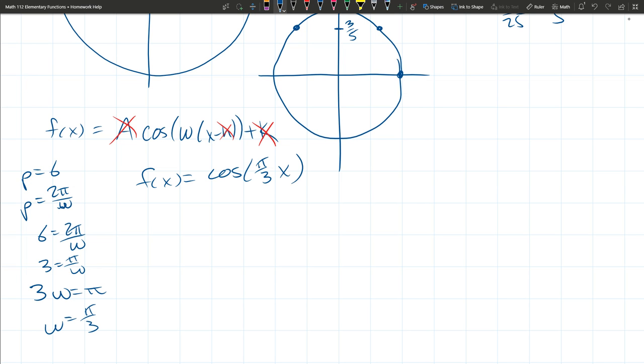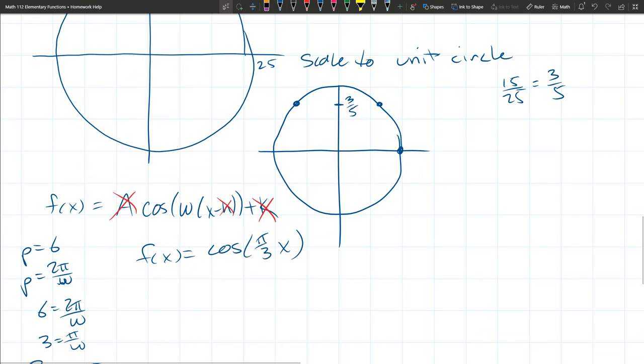So there we go, that's our function. Okay, we want to know when is it height of three-fifths, so we can set 3/5 equal to cos(π/3 x).